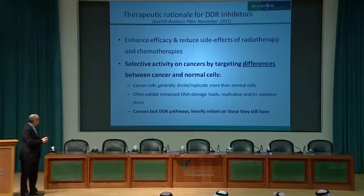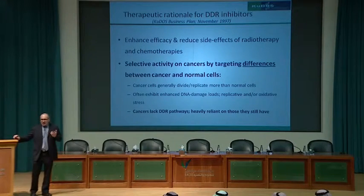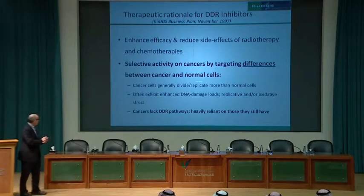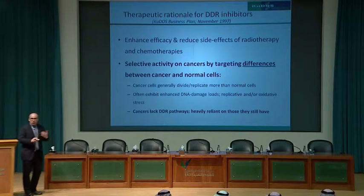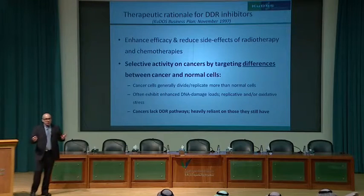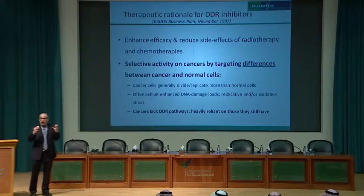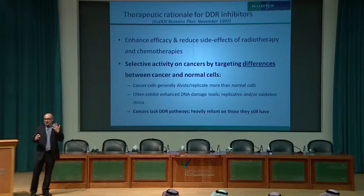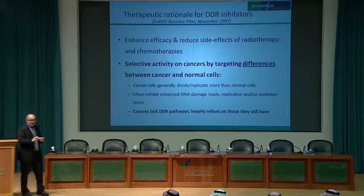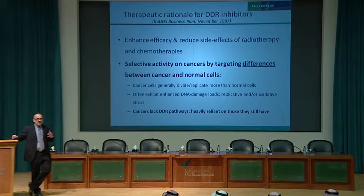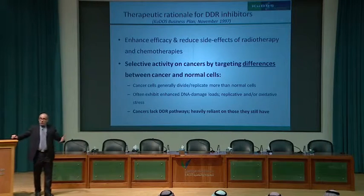Even in the mid-to-late 1990s, it was clear that many cancers rely on DNA repair pathways more than normal cells — this could be their Achilles heel. Cancer cells are often dividing and replicating more than normal cells, going through vulnerable phases more frequently. They often grow without sufficient oxygenation and race through the cell cycle without correct controls, exhibiting higher levels of DNA damage than normal cells.